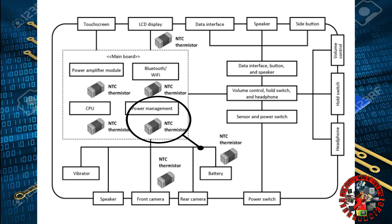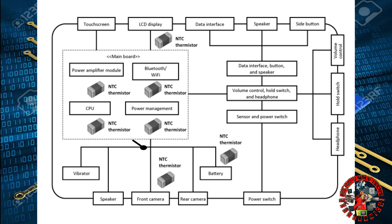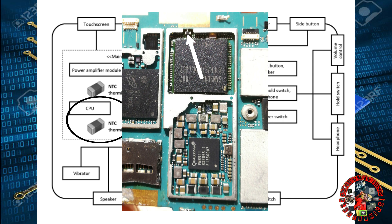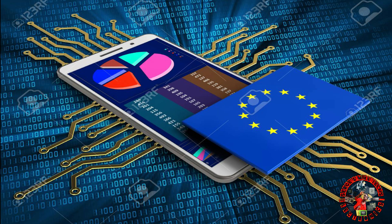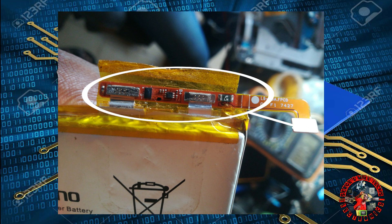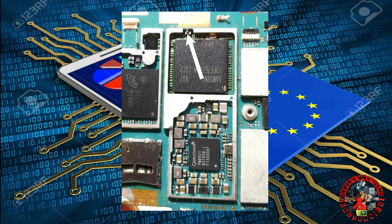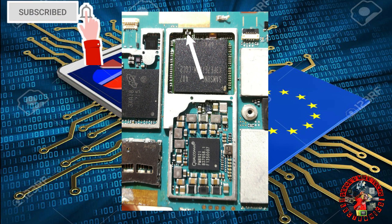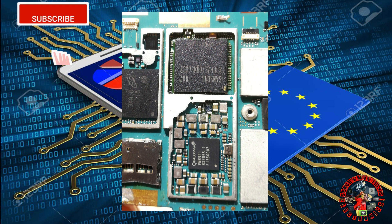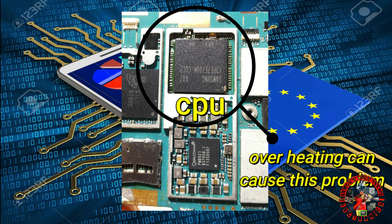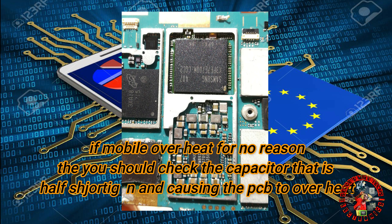The power section has an NTC thermistor, and the CPU also has an NTC thermistor — which is the main problem in most cases. In some cases, you can just change the battery circuit and the problem will be solved, only if the battery itself is still compatible. Also check the thermistor around the CPU and make sure the CPU is not overheating. If the CPU is overheating, that's why the thermistor is giving that error — check why it's overheating, and also check some capacitors for shorting.